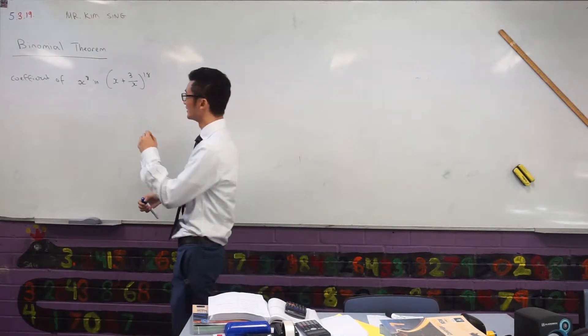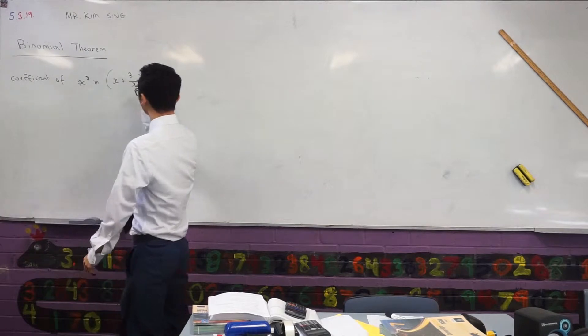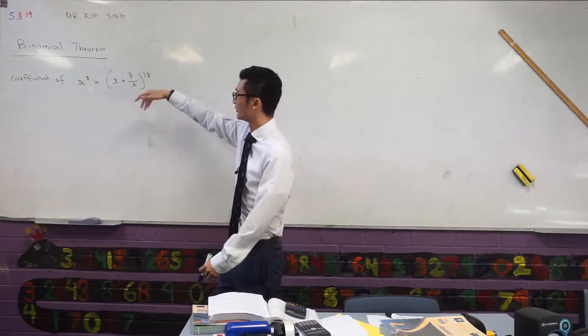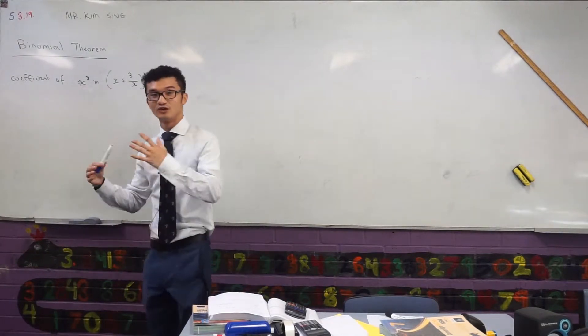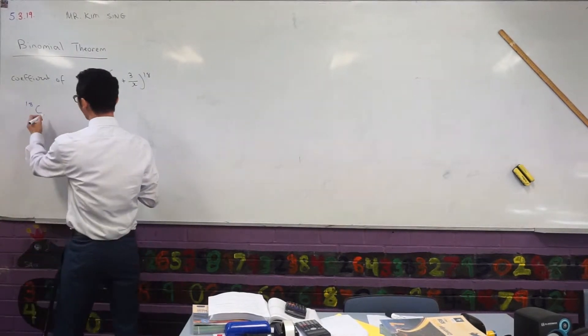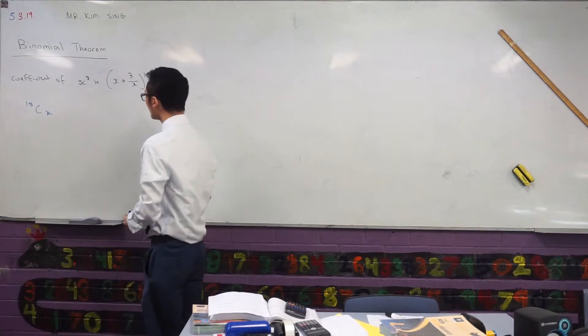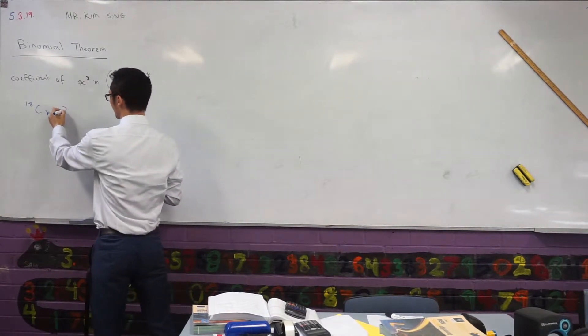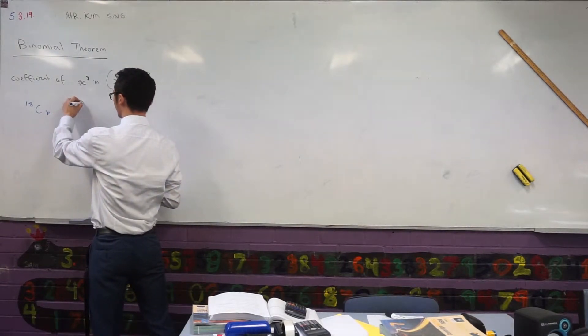So what does the binomial theorem say? It says that if I have some power here, I can write the general term of this expansion, so any of the terms in this way: 18 choose k, and I take my first term. That would be x to power 18 minus k.